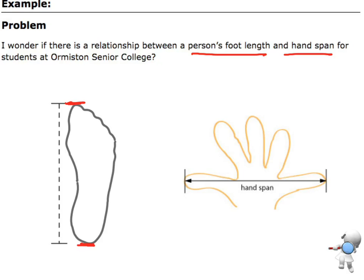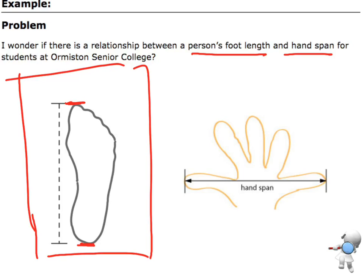So one idea is that I could get a piece of paper and I could get somebody to stand on it and I could trace their foot outline on that piece of paper and then measure that foot outline.